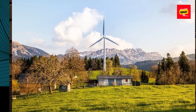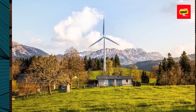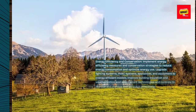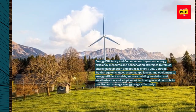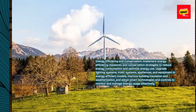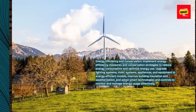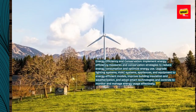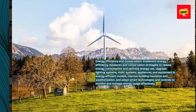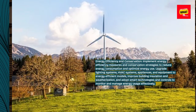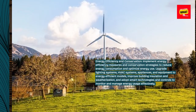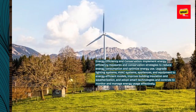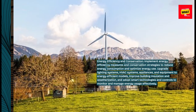Energy efficiency and conservation. Implement energy efficiency measures and conservation strategies to reduce energy consumption and optimize energy use. Upgrade lighting systems, HVAC systems, appliances, and equipment to energy-efficient models, improve building insulation and weatherization, and adopt smart technologies and controls to monitor and manage energy usage effectively.